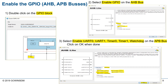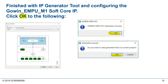Next, we initialize the General Purpose I/O by double-clicking on the GPIO block. We enable the GPIO on the AHB bus, then click on the APB bus tab and enable the peripherals such as UARTs, timers, and the watchdog. Click OK when done. We've successfully configured the M1 processor for a Gowen FPGA, so click OK on any remaining dialogs and we're ready to continue.